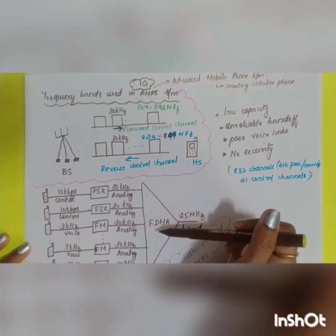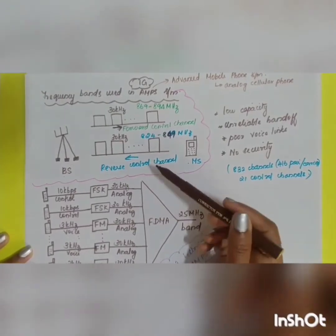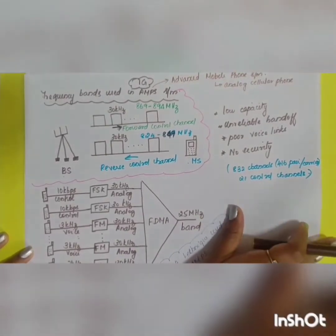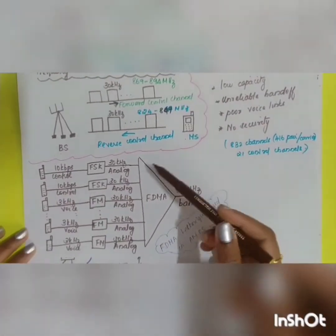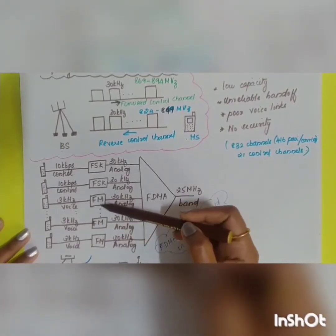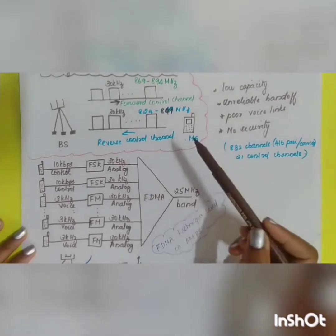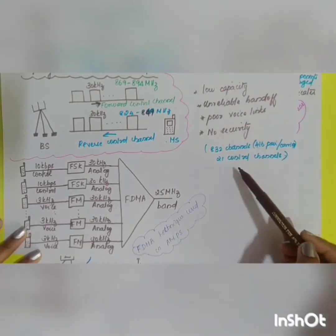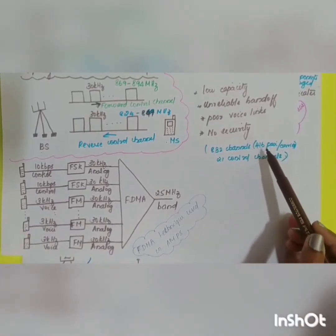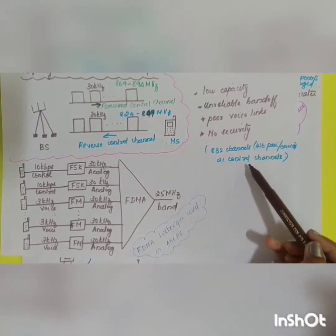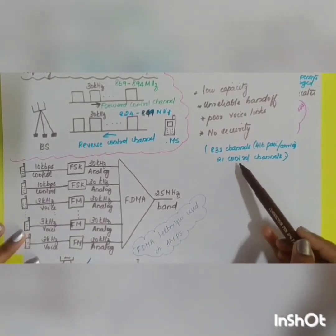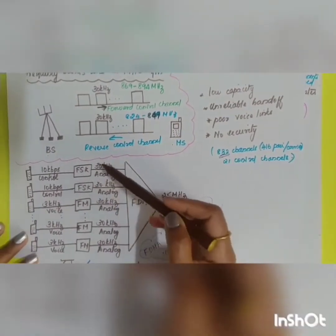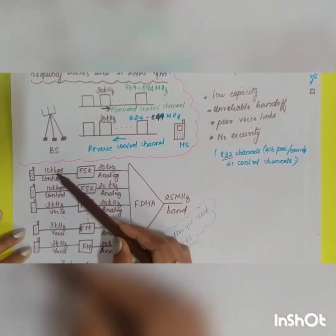FDMA stands for Frequency Division Multiple Access. The modulation used in AMPS is frequency modulation and FSK. In total, AMPS has 832 channels — 416 pairs per carrier — and among those 416 pairs, 21 channels are used as control channels.